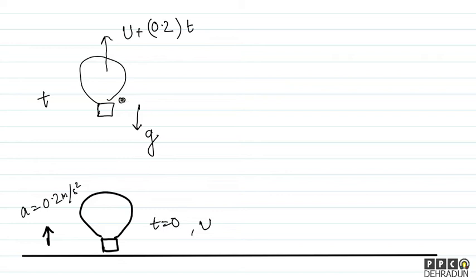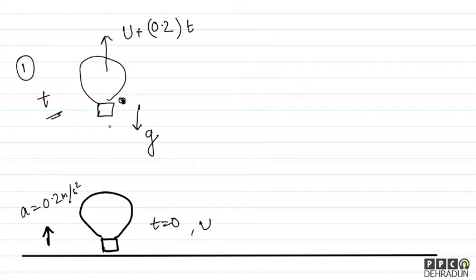2 seconds बाद एक और पत्थर drop किया जाएगा, और उसके 1.5 seconds बाद दोनों पत्थरों के बीच की दूरी पता करनी है। सबसे पहले, जो पत्थर अभी drop हुआ — पत्थर नंबर 1 — उसकी location पता करते हैं। T बराबर T+3.5 मतलब 3.5 seconds के बाद यह पत्थर कहाँ होगा। इस particular instant को origin मान लेते हैं।